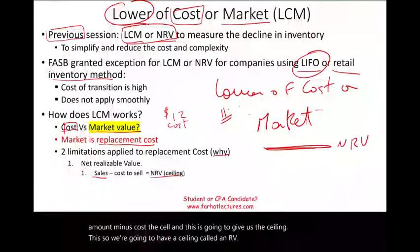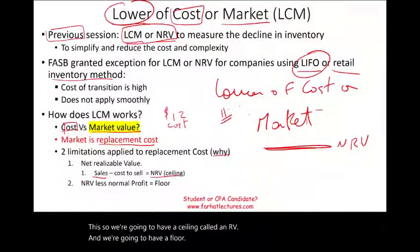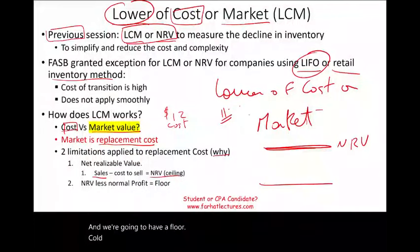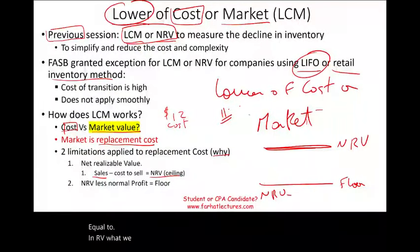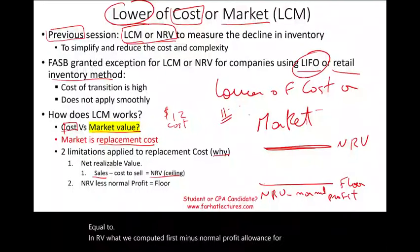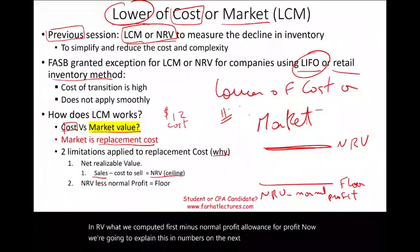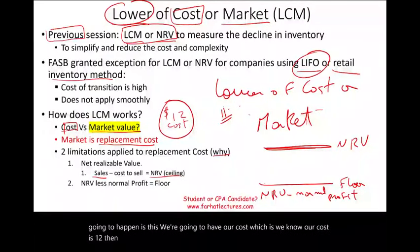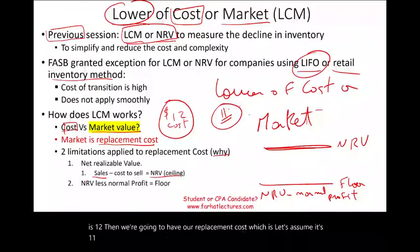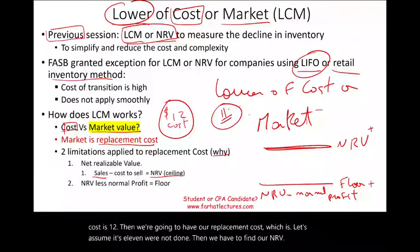We're also going to have a floor. The floor equals NRV minus normal profit — the allowance for profit. Simply put, we have our cost, which is $12, and our replacement cost, let's assume $11. We're not done — we then have to find our NRV and our floor. NRV equals sales minus cost to sell; the floor is NRV less normal profit.